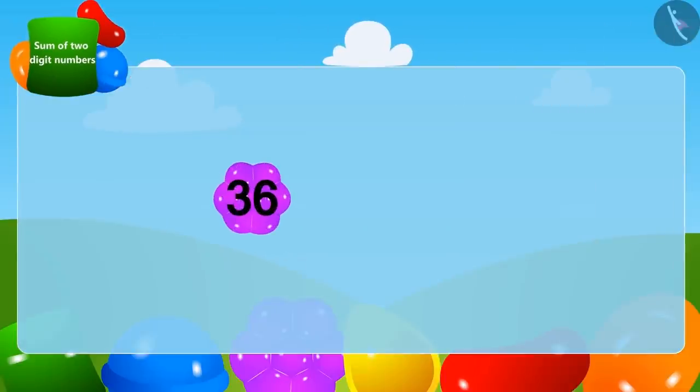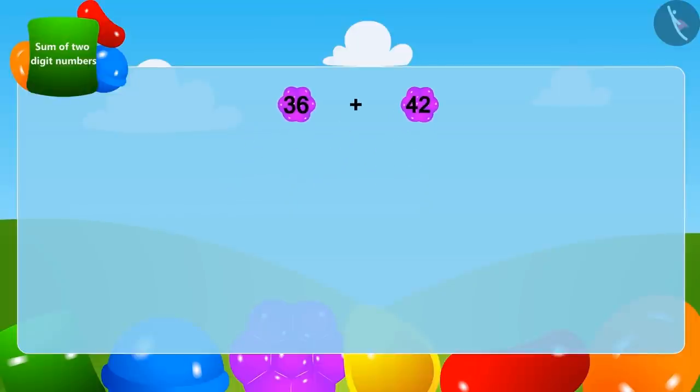The crow had 36 stones and will add 42 stones given by Appu. We can write 36 as 30 plus 6.